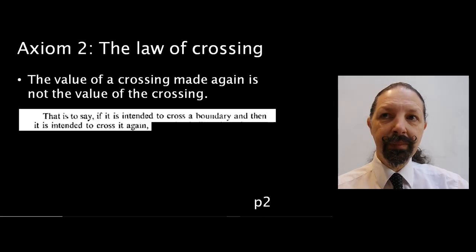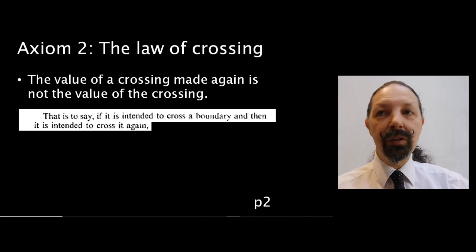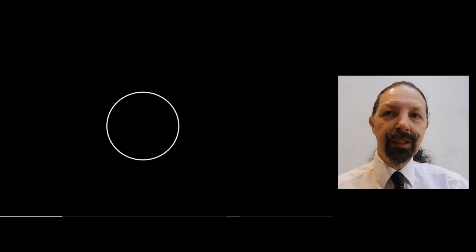What does this mean? Well, if you want to cross a boundary and then cross it again, let's look at what this looks like. Here's a boundary. We're going to cross it. That means going from one side to the other. Let's say we're moving a sack of potatoes from the outside of the circle to the inside of the circle. And then we're doing it again. We're moving the sack of potatoes from the inside to the outside.